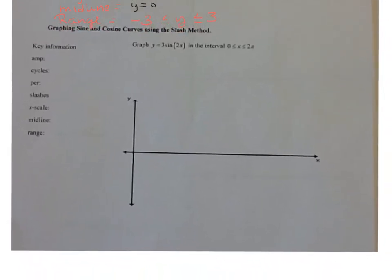Notice what I'm graphing — I'm graphing in a 2 pi interval. Any time you graph a sine curve or a cosine curve, I always want these key features written down. There are 7 things: the 5 we've been working on — amplitude, cycles, period, midline, and range — and then two new ones: the slashes and your x scale.